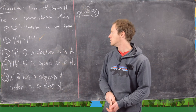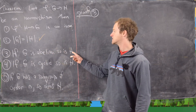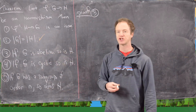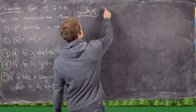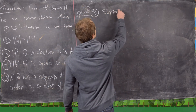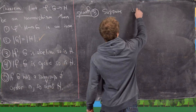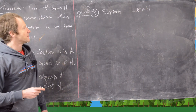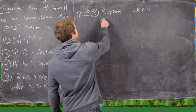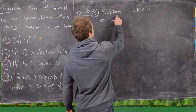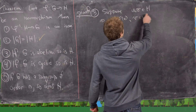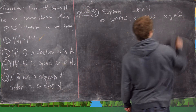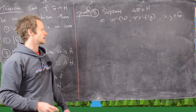Skipping part two, we move on to part three. We're assuming that G is abelian and we want to show that H is abelian. Suppose that U and V are in H. That means U equals phi(X) and V equals phi(Y) for some X and Y in G, which we know because phi is onto.